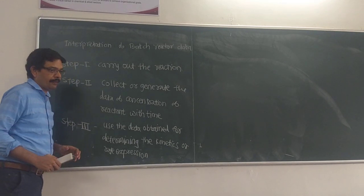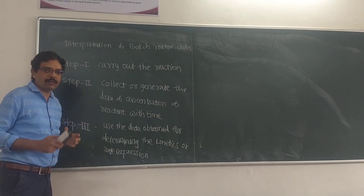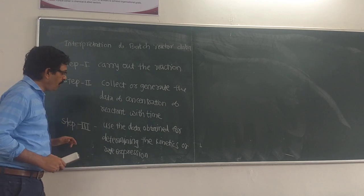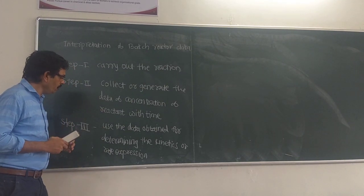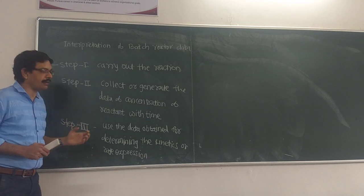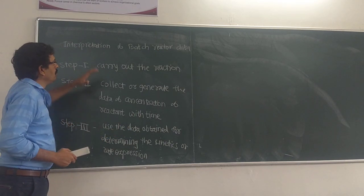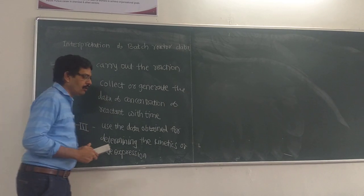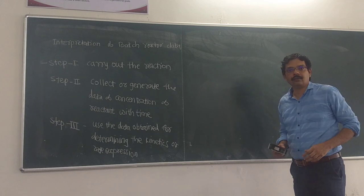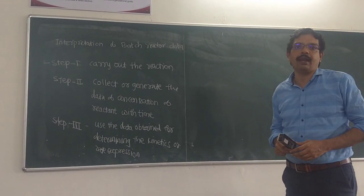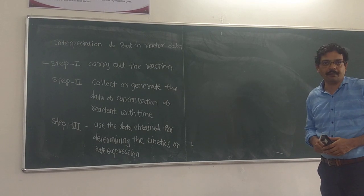Step 3 is to determine the kinetics or rate equation. Basically, the meaning of interpretation of batch reactor data is to use the data obtained during the experiment for determining the kinetics and the rate expression. Evaluating that data using various methods of kinetic analysis — such as the integral method or differential method of analysis — constitutes the interpretation of batch reactor data.